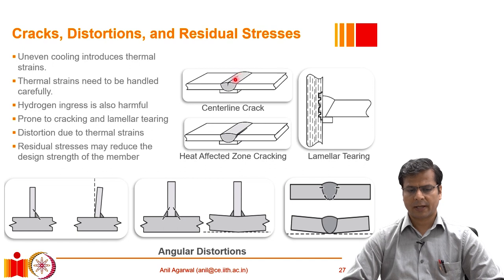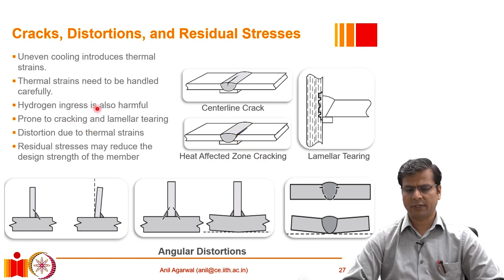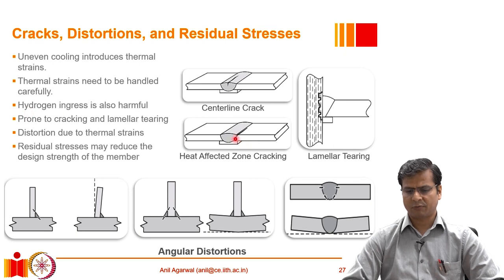There are two or three types of cracks that may appear. Centerline cracking typically happens immediately after welding is done. There is also heat affected zone cracking, which often occurs because of hydrogen ingress — it happens a few hours after welding is completed, not immediately. The source of hydrogen is usually moisture in the electrode or surrounding area, which ionizes and affects the weld quality near the heat affected zone.